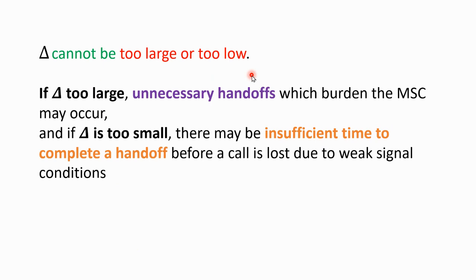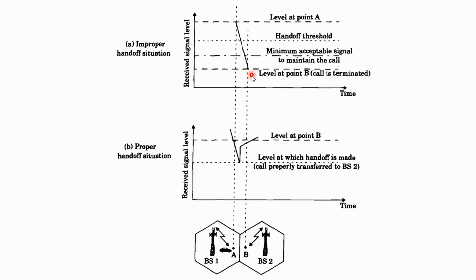If delta is too large, unnecessary handoffs occur within the cell, loading the MSC and requiring more power, which is not desirable for a mobile communication system. Similarly, delta cannot be too small. If delta is too small, the signal may cross the minimum detectable signal threshold — for example, if the minimum detectable signal is minus 90 dBm and it reaches minus 92 dBm — the call will be dropped and terminated.